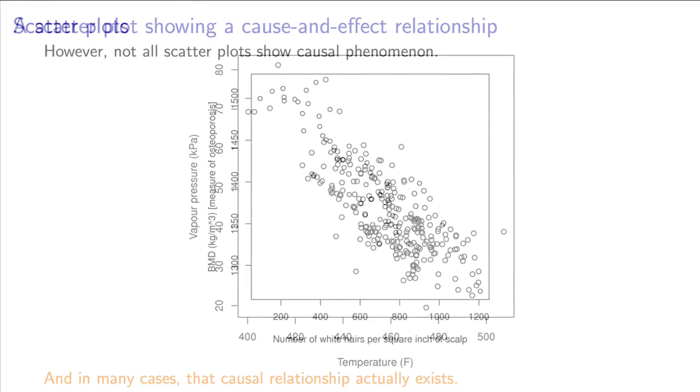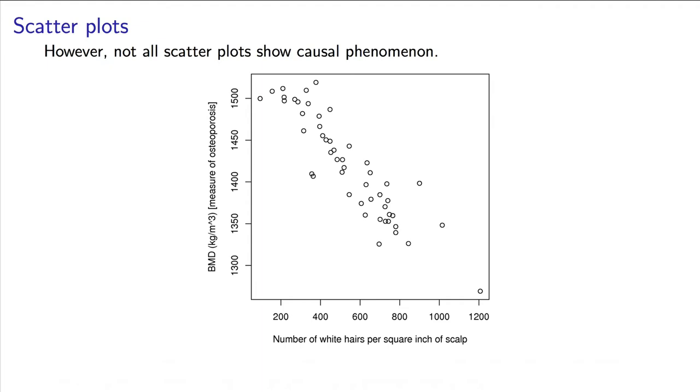Now take a look at this scatter plot, though. The x-axis shows the number of white hairs on a person's head. The y-axis shows the bone mineral density, BMD. People with low BMD are prone to higher rates of bone fracture, as their bones are more fragile.